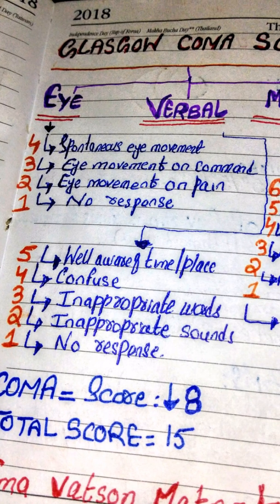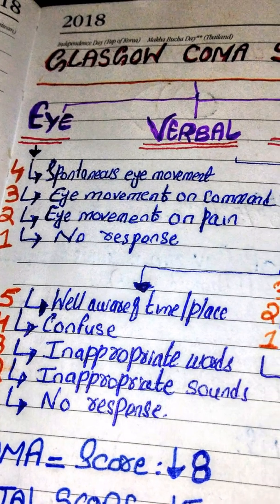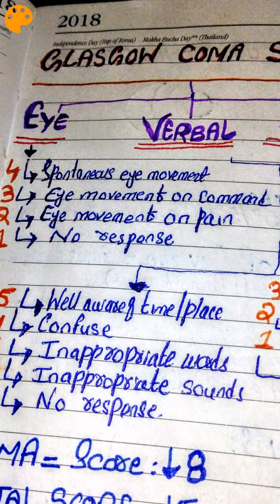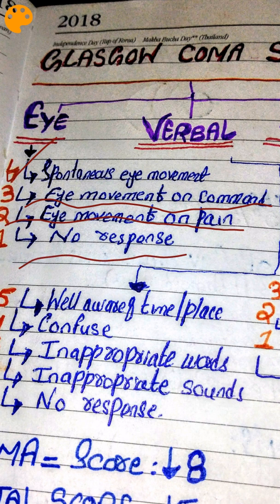Now let's discuss the Eye component. E4 means spontaneous eye movement — the patient is moving their eyes without any command. E3 means eye movement on command — the patient moves their eyes when told to. E2 means eye movement on painful stimuli only, not on command. E1 means no response at all. E4 is the best response and E1 is the worst.